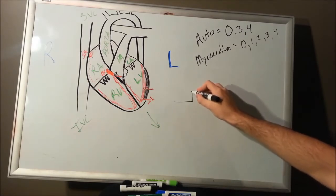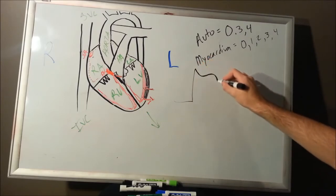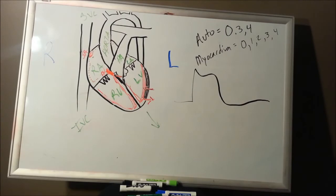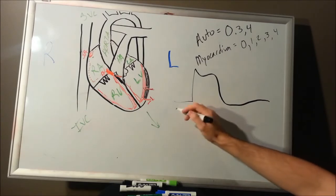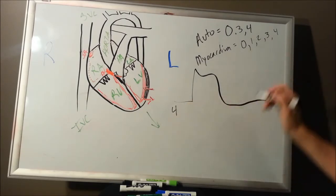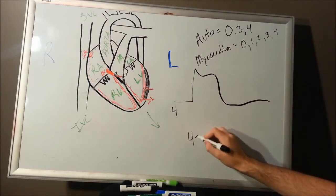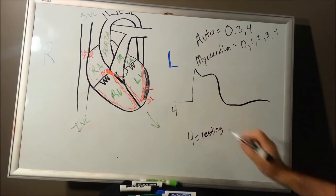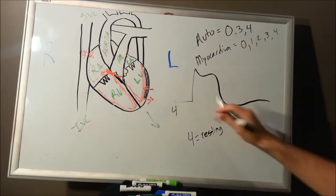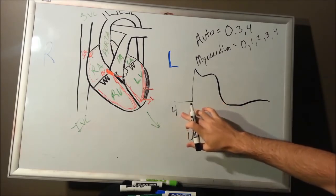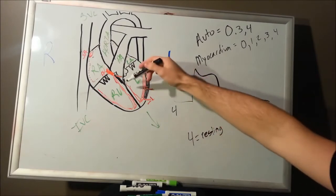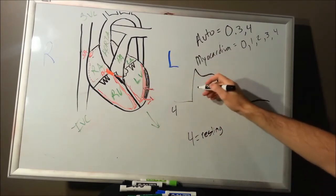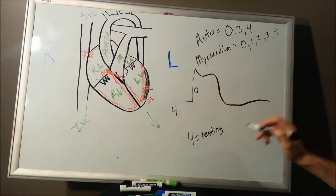Let's look at this graphically. At this point, this is going to be called phase four. Phase four is going to be resting — the cell does not depolarize, it hasn't seen an action potential. When an action potential comes down and sees the myocardium, we're going to have phase zero: depolarization.